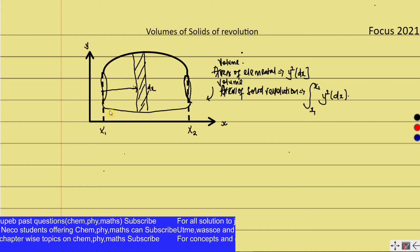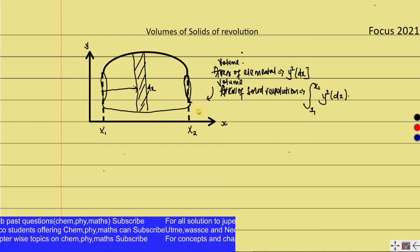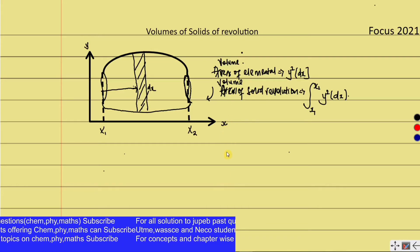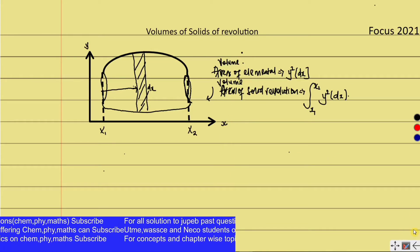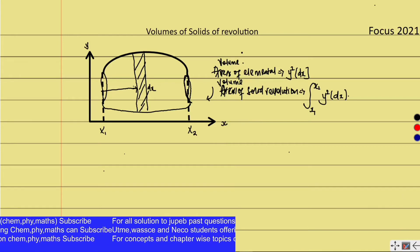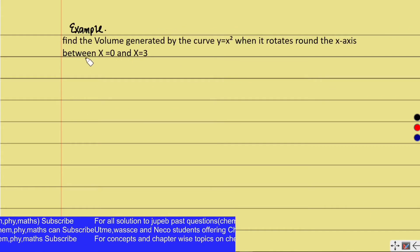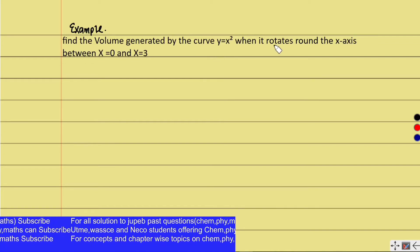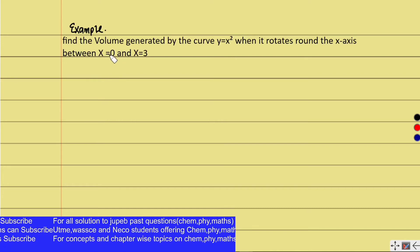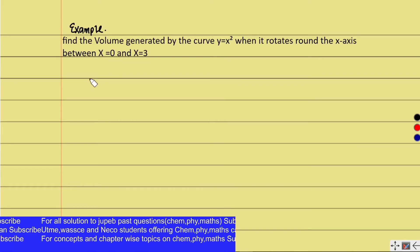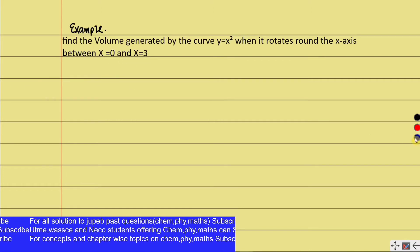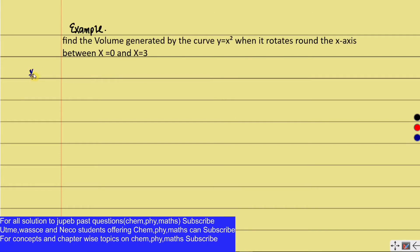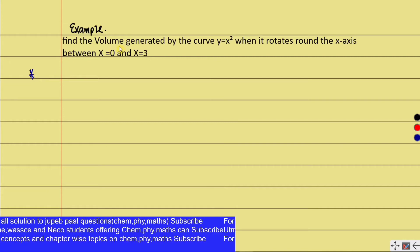We use the integration of limits to get the whole part. To understand this application well, let's take one example. Find the volume generated by the curve y = x² when it rotates around the x-axis between x = 0 and x = 3.